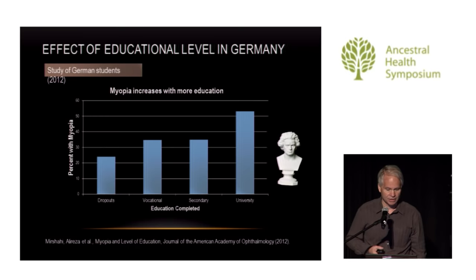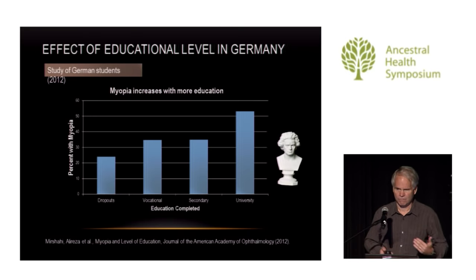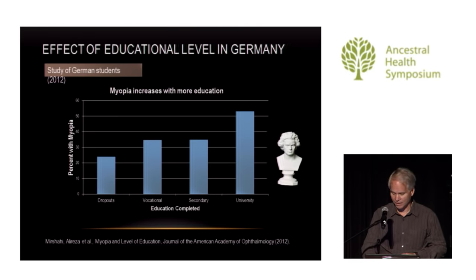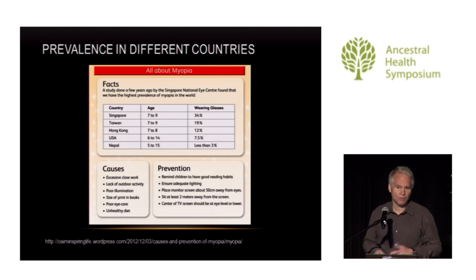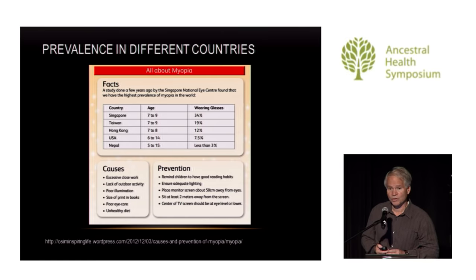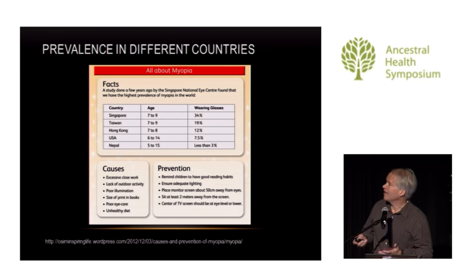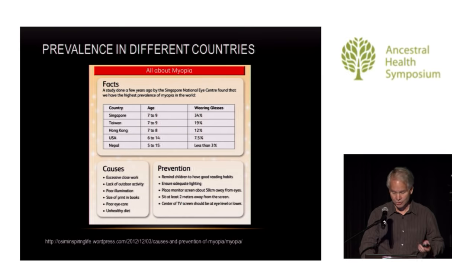A study done in Germany showed that people who did not complete secondary education had maybe 20% myopia. Those who completed secondary education, it bumped up to maybe 35%. Those who completed university, more than half had myopia. There's geographic distribution indicating countries in Asia with more schooling have higher rates. Even at young ages like 7 to 9, Singapore shows 34% myopia whereas Nepal is only 3%, compared to maybe 7 or 8% in U.S. school children.